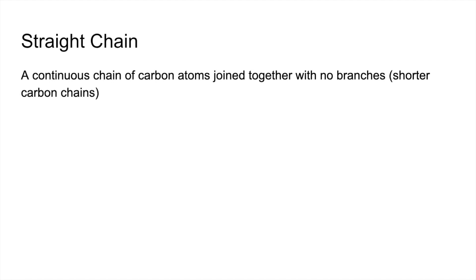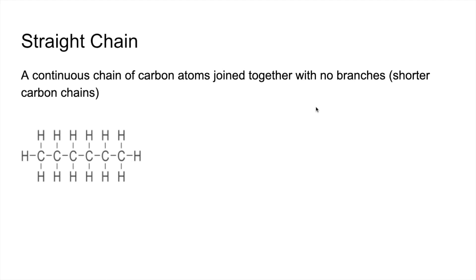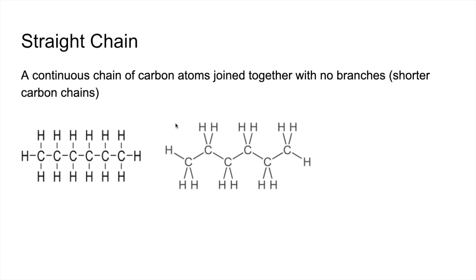So the next term is straight chain — that's a continuous chain of carbon atoms joined together with no branches. The examples I'm going to show you first are all the same molecule, called hexane. That's obviously a continuous chain of carbons. Sometimes it's represented in a kinked form, because in reality the carbons are kinked — it's still classed as a straight chain. As you get more into organic chemistry, you'll come across skeletal formula — that's also hexane, and it's still a continuous carbon chain, so it's classed as a straight chain.